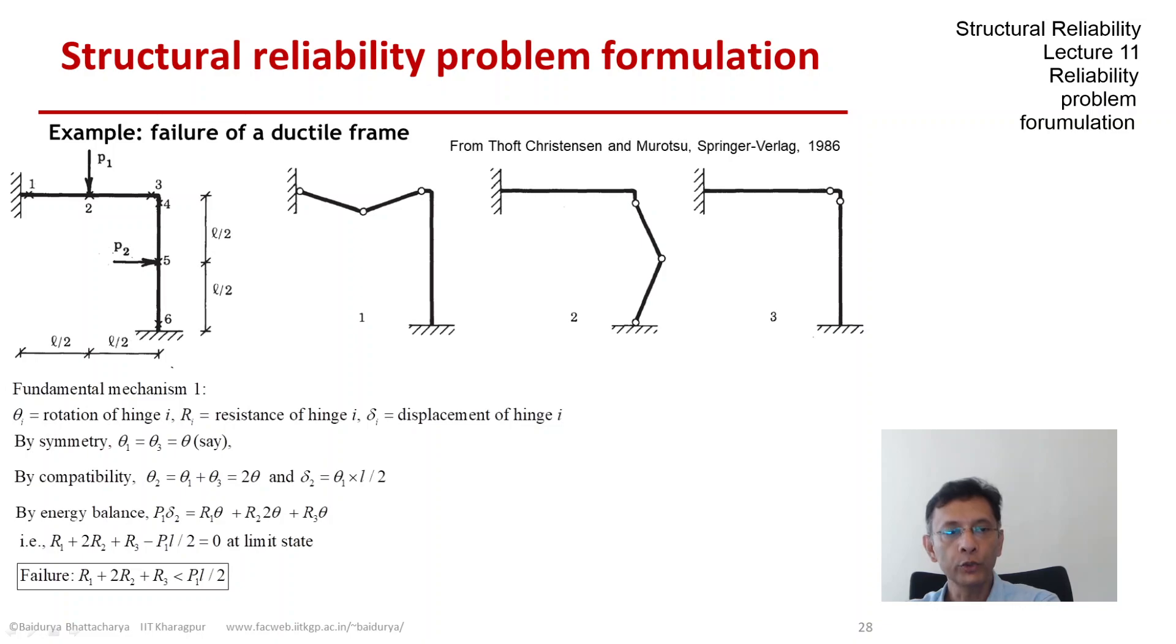For mechanism 2, the answer would be given in terms of R4, R5, and R6, as you see on the screen, and mechanism 3 does not involve any work done by the forces as they have been defined here. The mechanism 3 has a limit state given in terms of only R3 and R4. P1 or P2 are not involved.